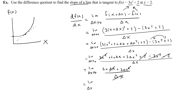After canceling, I have the limit as delta x approaches zero of 6x plus 3 delta x. Now I can let delta x equal zero — 3 times zero disappears — and I'm left with 6x. This is my derivative: the infinitely small change in f over the infinitely small change in x, giving a slope of 6x.